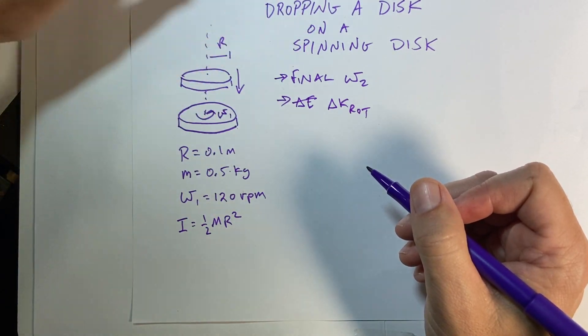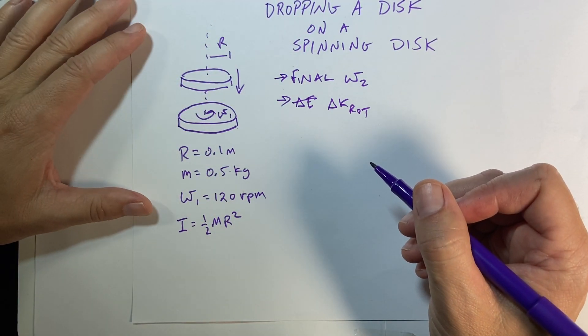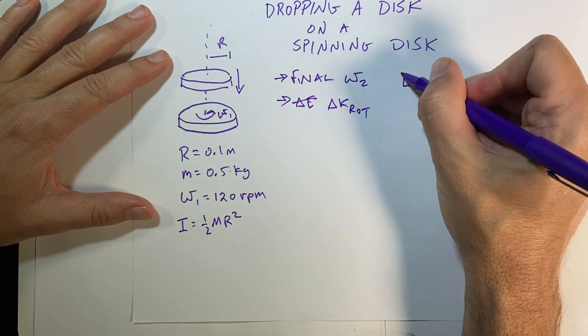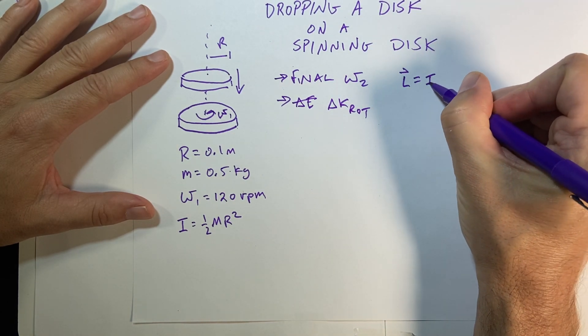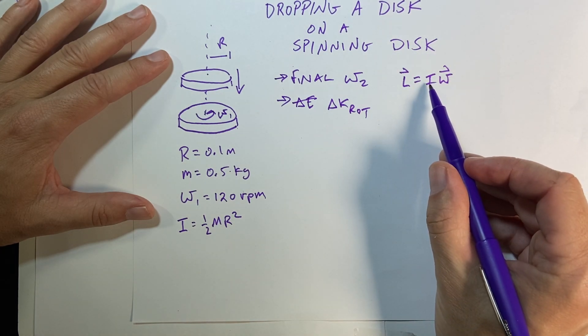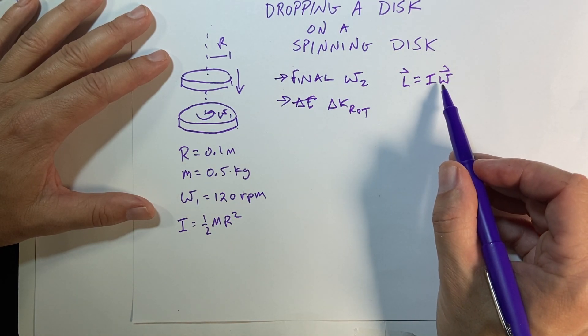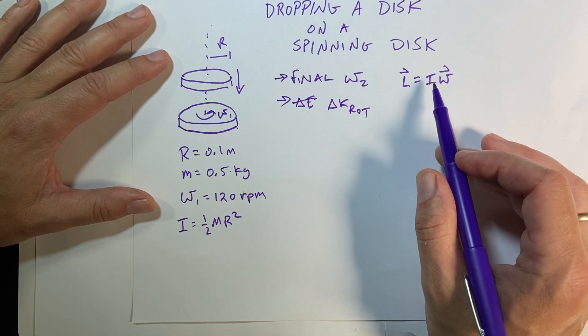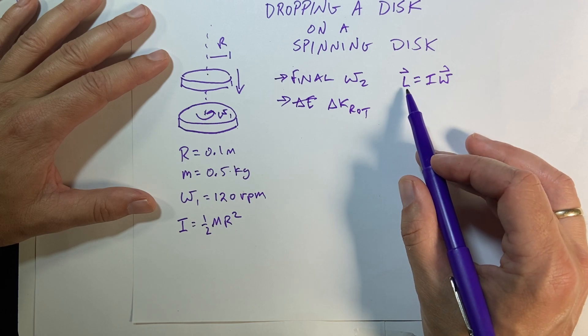So at the beginning, this is a conservation of angular momentum problem. So remember that angular momentum for a rigid object is defined as I omega. Where I is the moment of inertia and omega is the angular velocity. So this is the scalar version of the moment of inertia. Just so you know, there is a more complicated version. And L is the angular momentum.